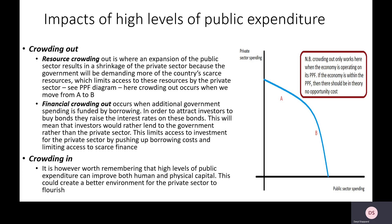Financial crowding out occurs when increased government spending requires more borrowing, meaning more bonds are created to raise funds. More money going into bonds means less money is available to lend to households and firms, so the government hogging the economy's money leaves less for individuals and businesses to borrow — stopping business growth. However, the crowding in argument suggests that if government spending upgrades infrastructure and human capital, it creates a better environment for businesses to expand and invest.